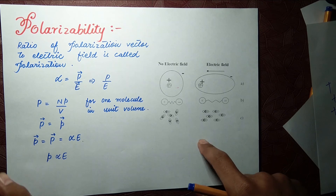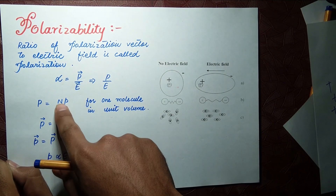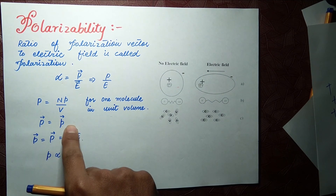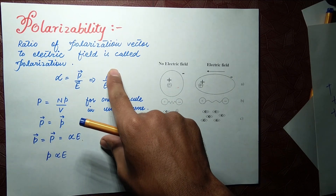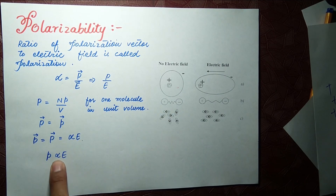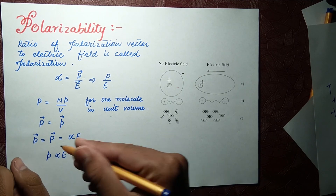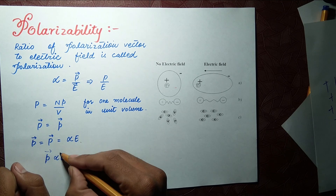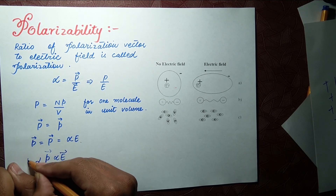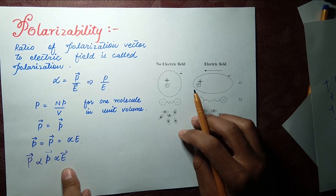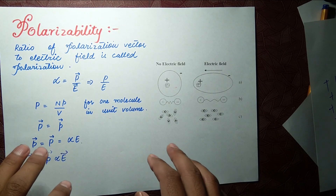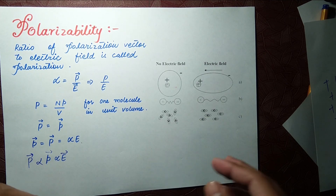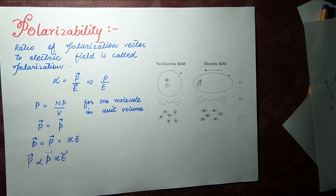In this case, polarization vector P and dipole moment p will be equal to each other. We can write P equals alpha times E. Since the polarization vector P is directly proportional to E, capital P is also directly proportional to E. In our next lecture we will discuss the electric displacement vector D and how it is formed. Till then, assalamualaikum and thank you very much for your time.